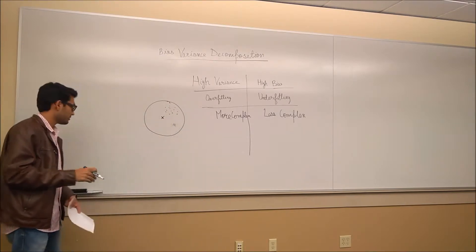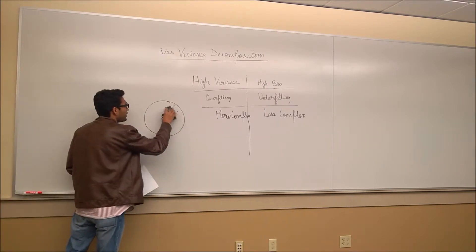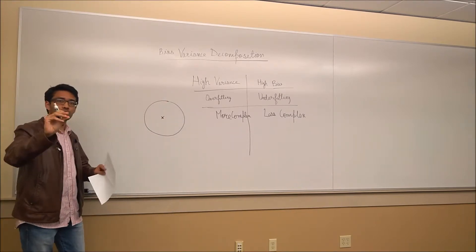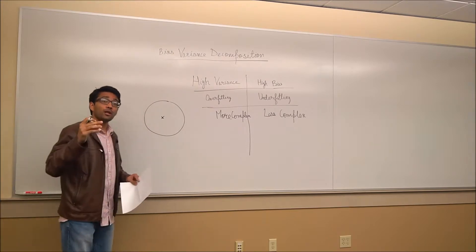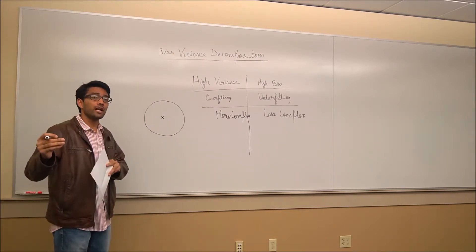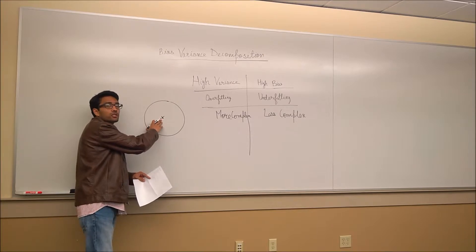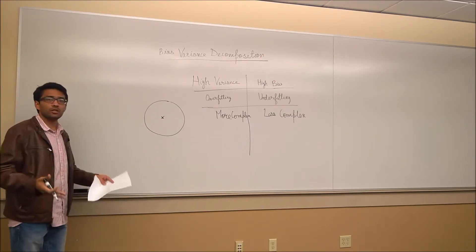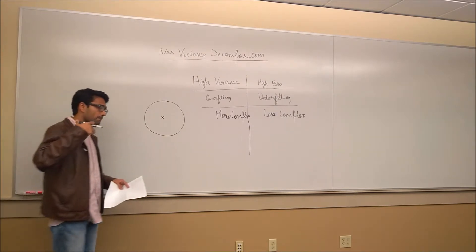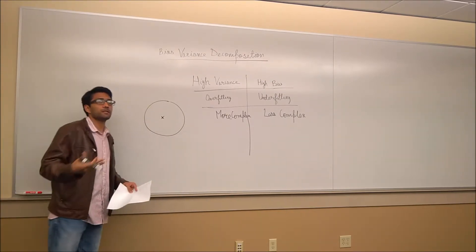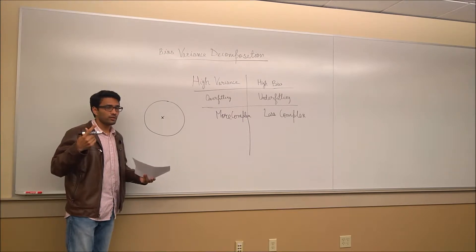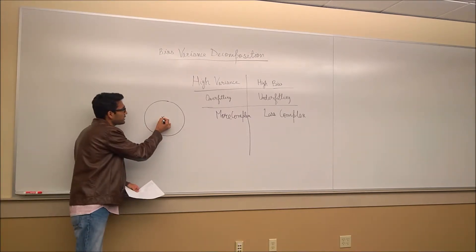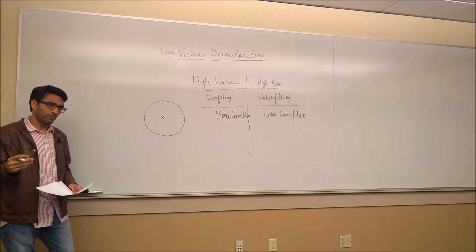But if my predictions are scattered all over the place, then that has high variance. And bias-variance trade-off says that you can hit the target in a close range or you can make the average of those target hits as close to the target as possible. You cannot have both. And this is what the bias-variance trade-off is.